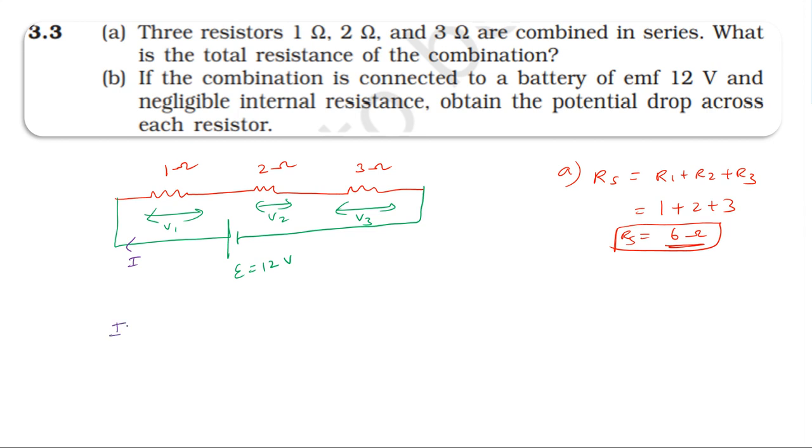The current I is equal to voltage divided by total resistance. I = E / R_total = 12V / 6 ohm = 2A. So the current through the circuit is 2A.